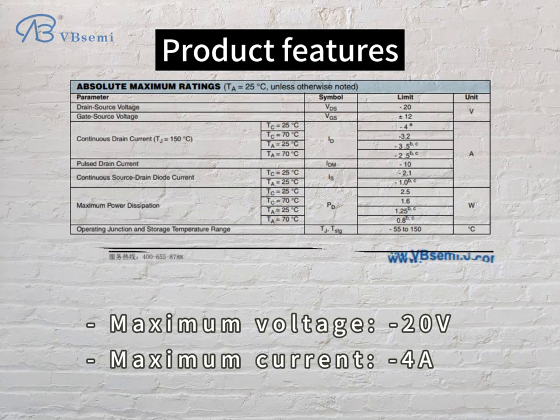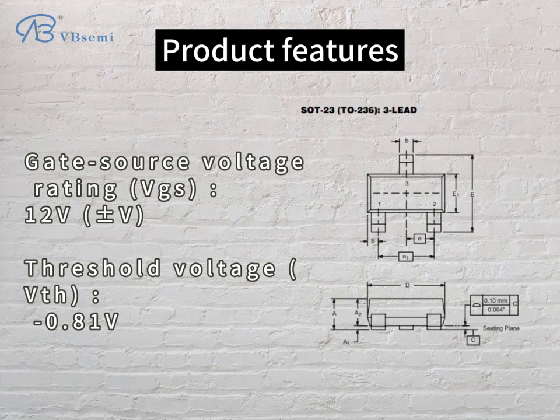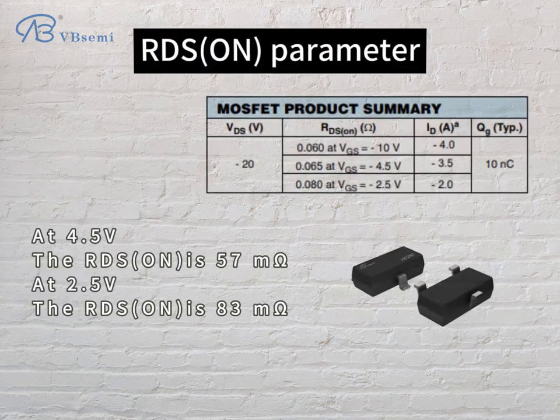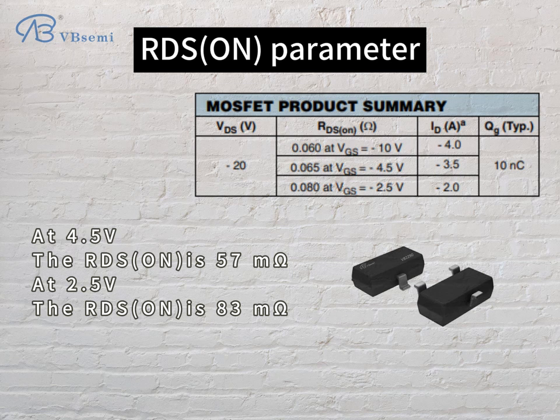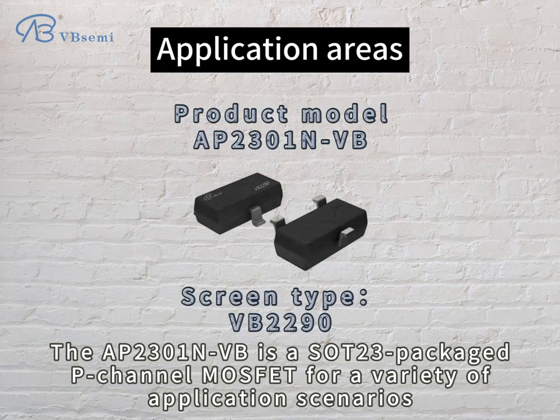Product features: maximum voltage 20V, maximum current, gate-source voltage rating VGS 12V, threshold voltage VTH -0.81V. RDS-ON parameters: at 4.5V the RDS-ON is 57mΩ, at 2.5V the RDS-ON is 83mΩ.